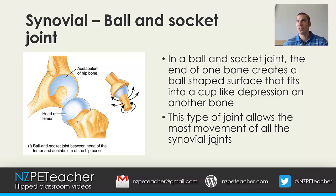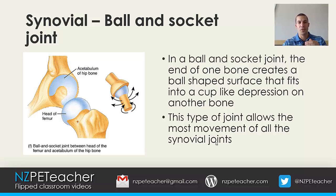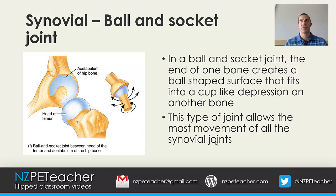One difference between a shoulder ball and socket joint and a hip ball and socket joint is that the hip's acetabulum is a little bit deeper, so the head of the femur sits tighter into it. In the shoulder joint, the acetabulum is much more shallow, making it more susceptible to injury.